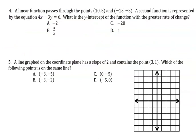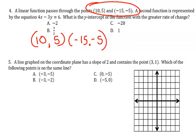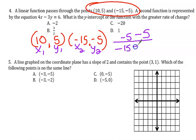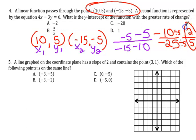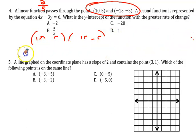Now we're looking at a word problem: a linear function passes through two points, a second function is represented by an equation — what is the y-intercept of the function with the greater rate of change? First, let's find the slope for the first function. I have points (10, 5) and (-15, -5): x1 y1 and x2 y2. So slope equals negative 5 minus 5 over negative 15 minus 10, which is negative 10 over negative 25. Two negatives make a positive, reduce by 5 — the slope is two-fifths.